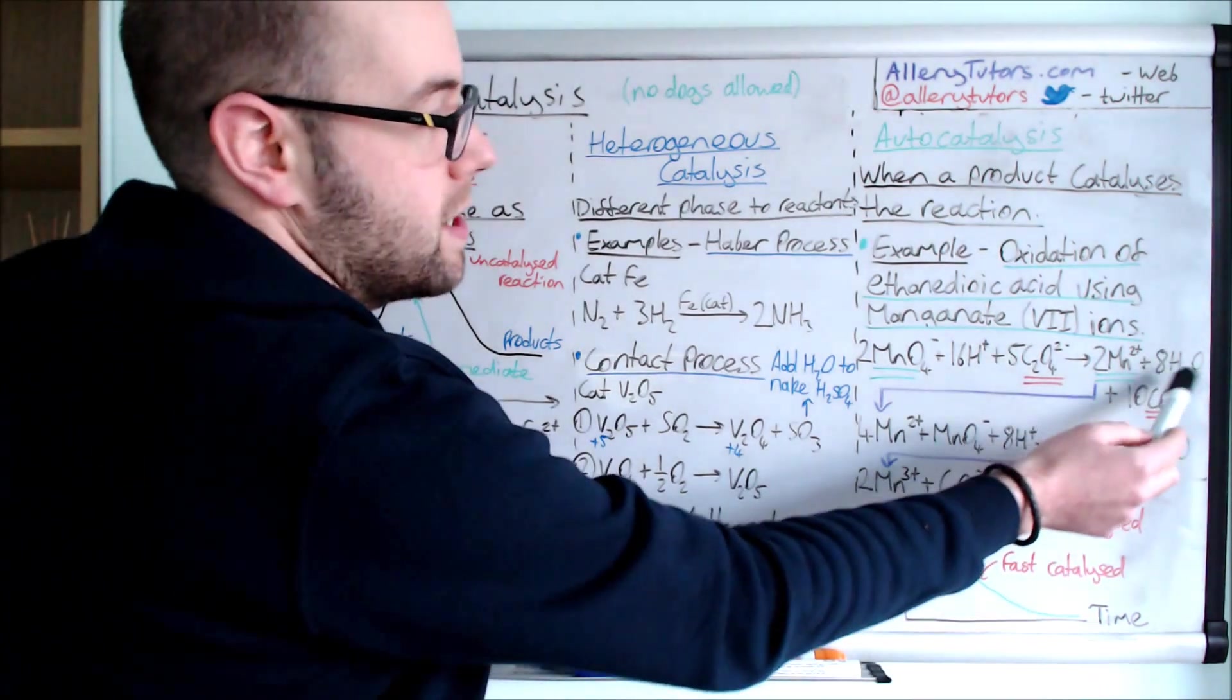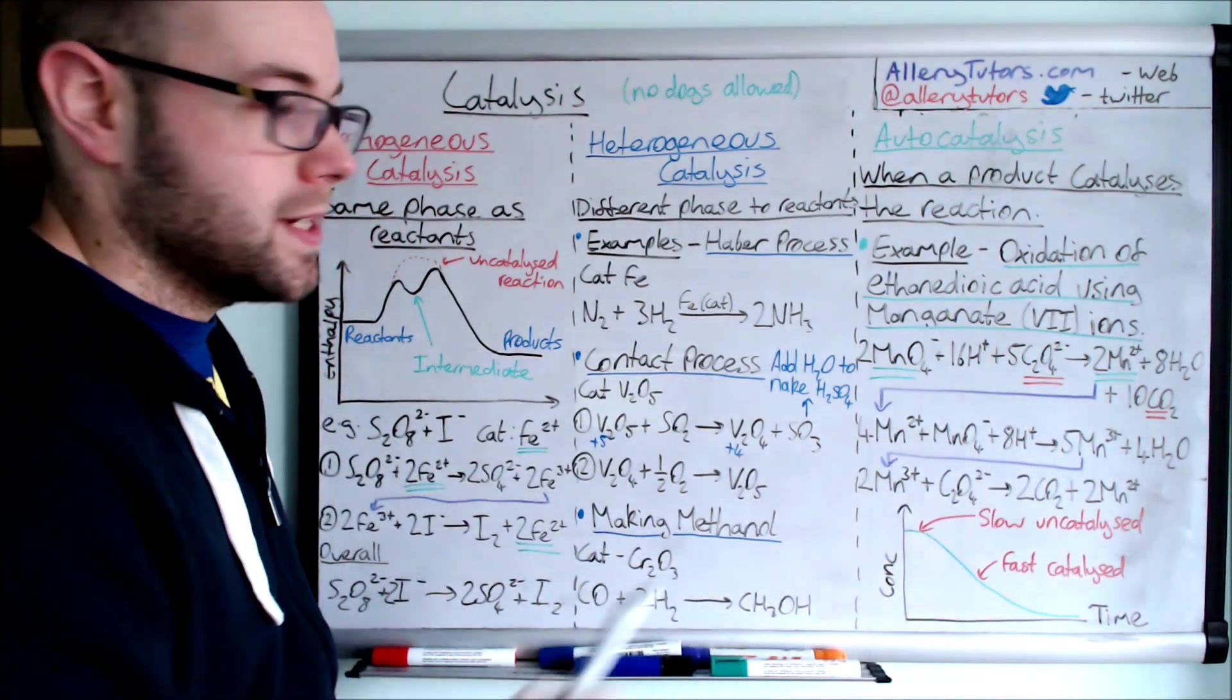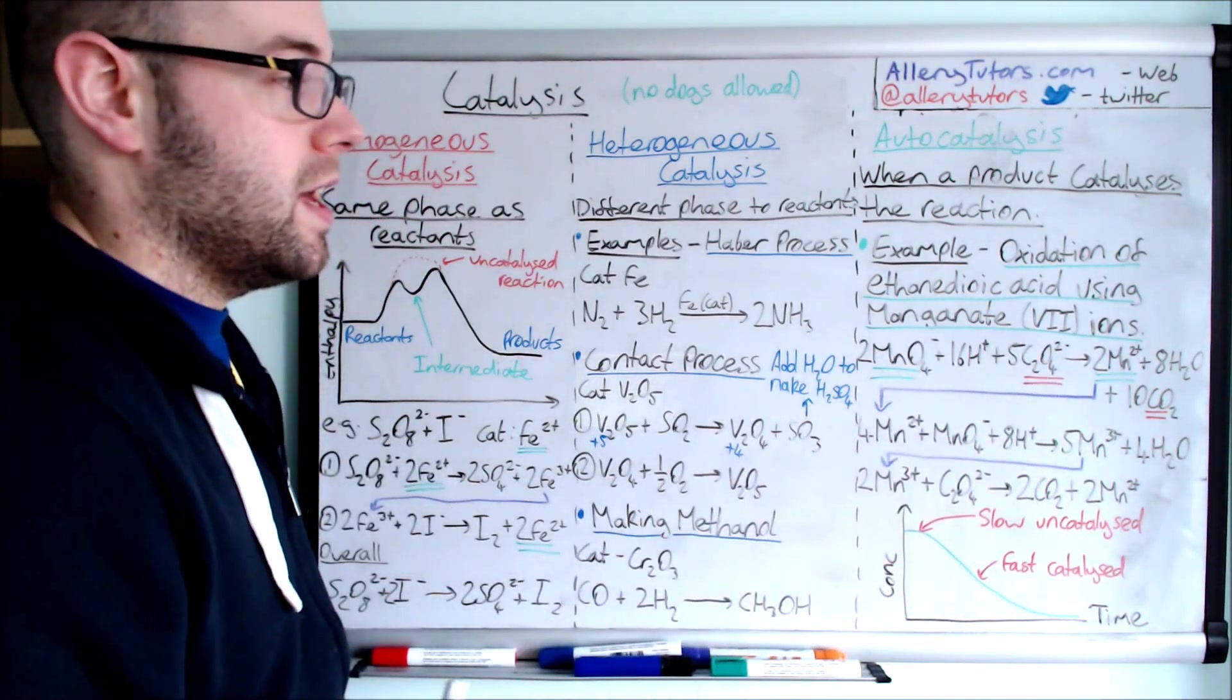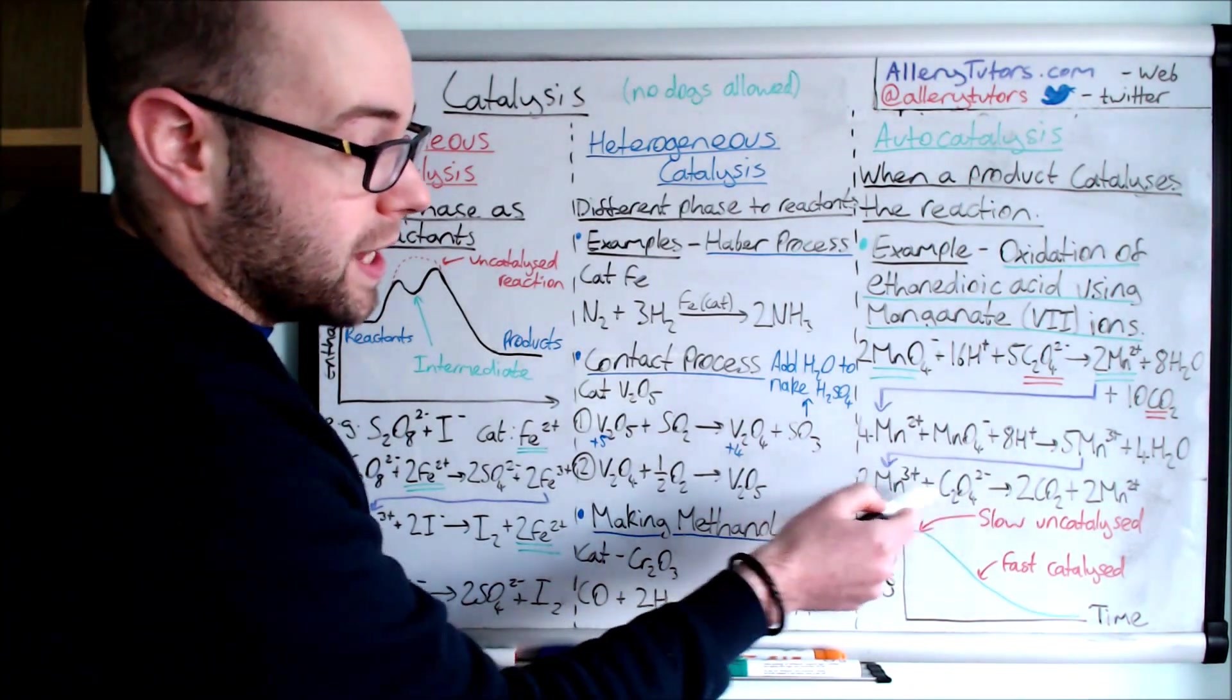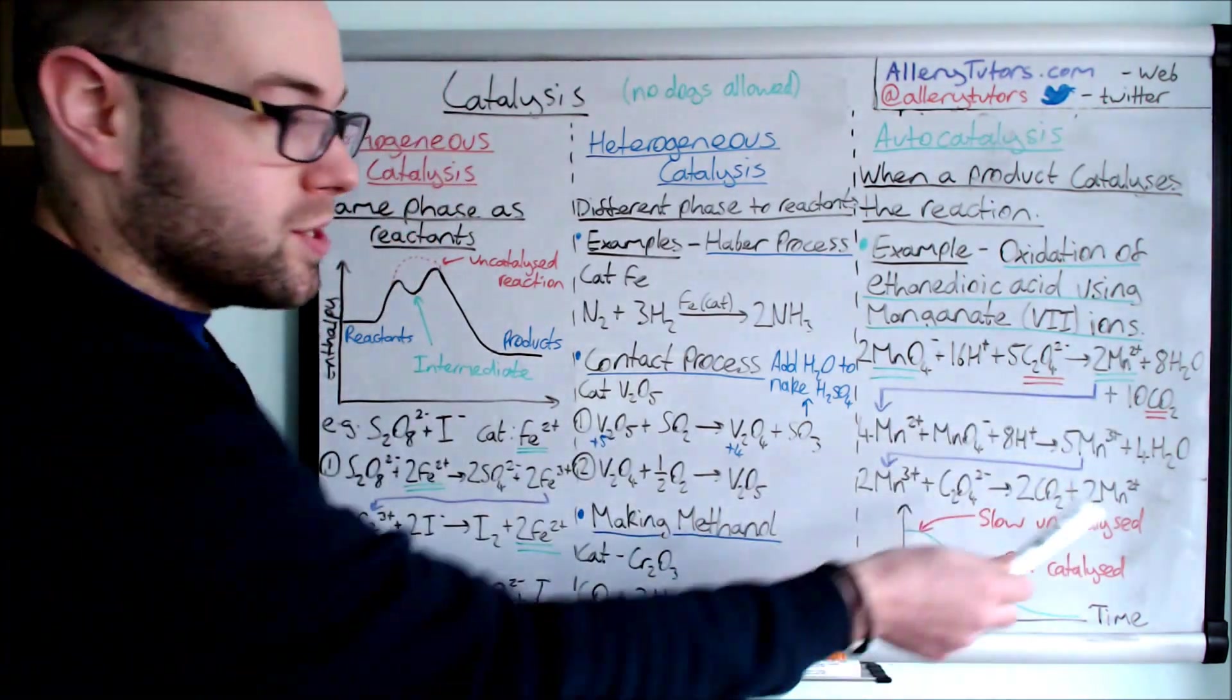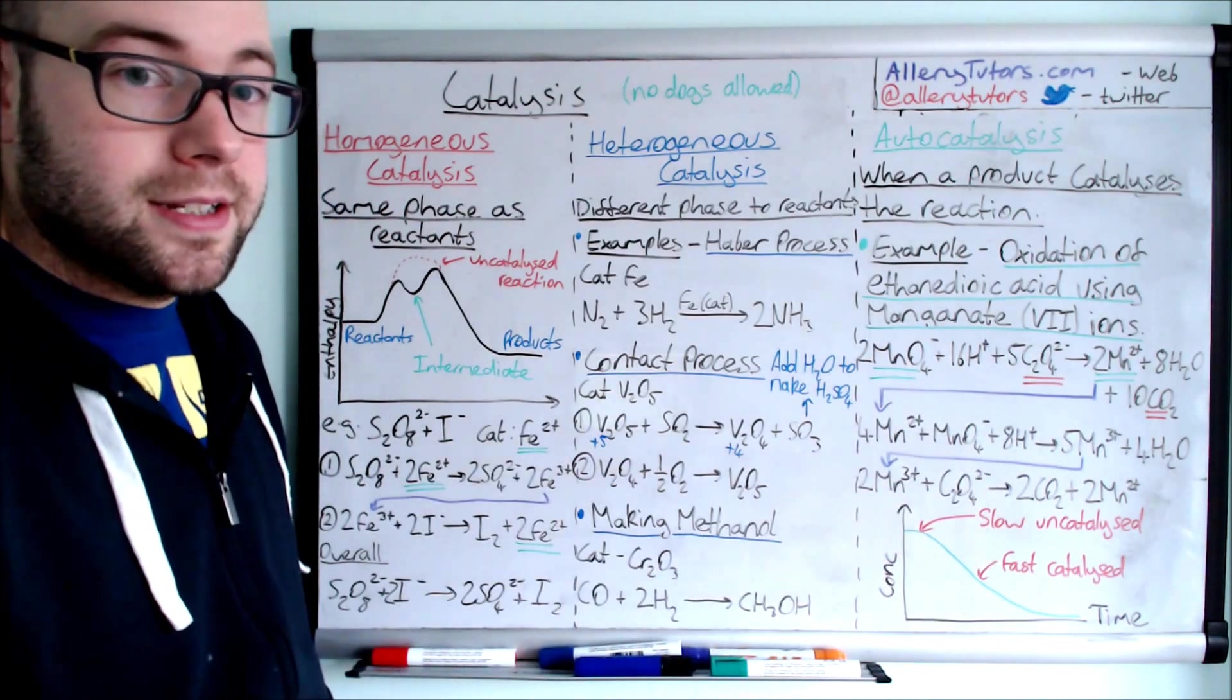So we've got one product but this Mn3+ or this intermediate then reacts again, this time with the C2O4 ethanedioate ion. It reacts with that and it forms our other two products which is carbon dioxide and then Mn2+. And then this Mn2+ can go back and react again and it will keep on reacting until there's no more reactants left.